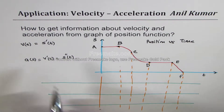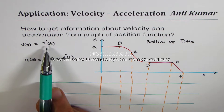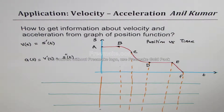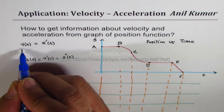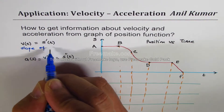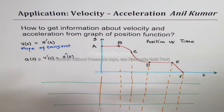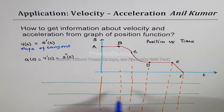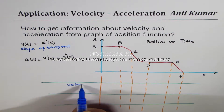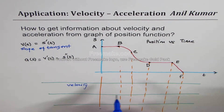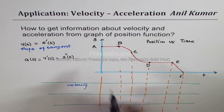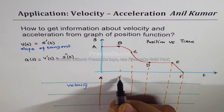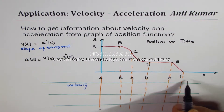From the graph, can you tell me when velocity will be positive, negative, increasing, or decreasing? For velocity, we have to consider the slope of the tangent — that will tell us the story about velocity. So we'll talk about velocity first. The points for us are a, b, c, d, e, and f.